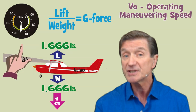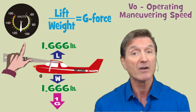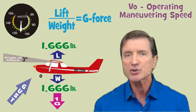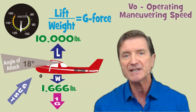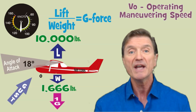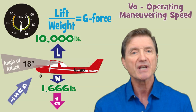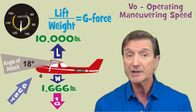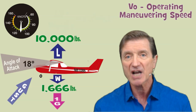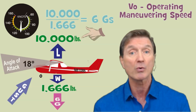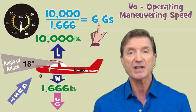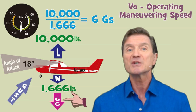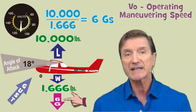With a speed of 110 knots at the lower weight of 1,666 pounds, a sudden and very strong gust could increase the angle of attack from 3 to 18 degrees. In other words, the angle of attack would increase six times over its starting value of 3 degrees, and that would increase the lift our wings produce by six times, giving us a g-force or load factor of 6 g's. Now, if our limit load factor was 4 g's, then this is beyond the limit of what our airplane can safely handle.